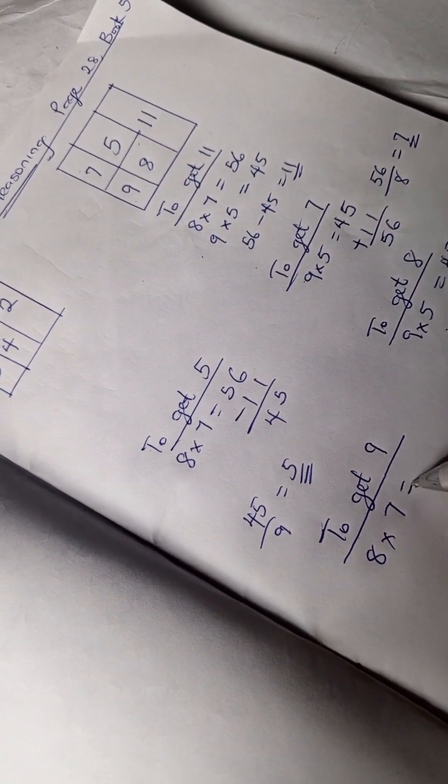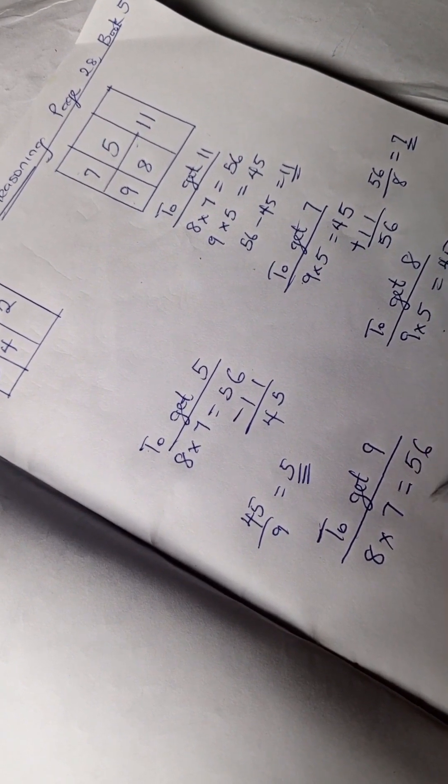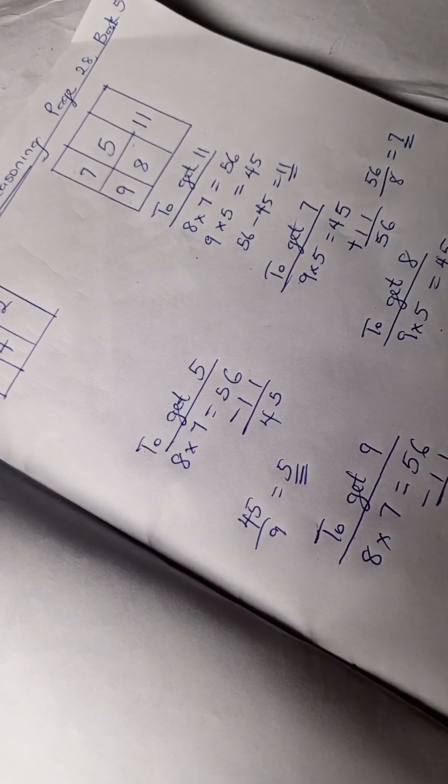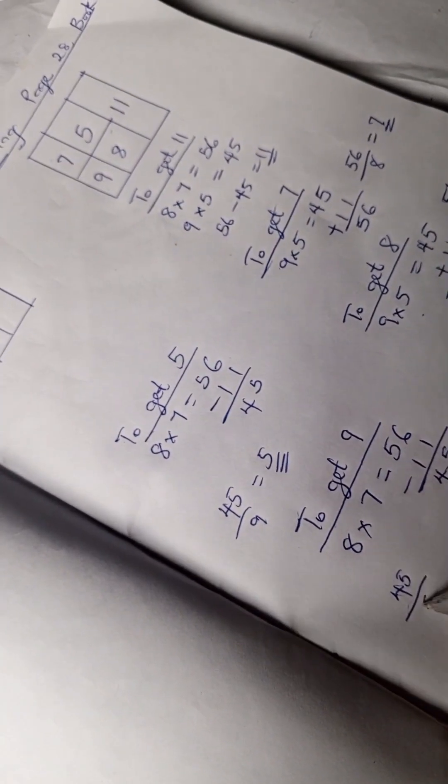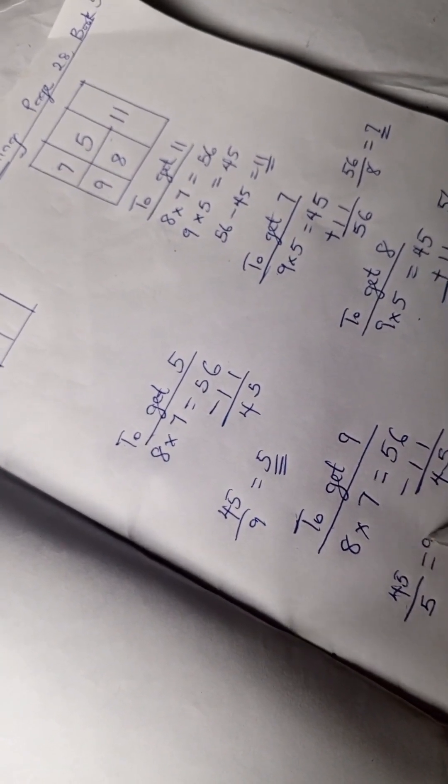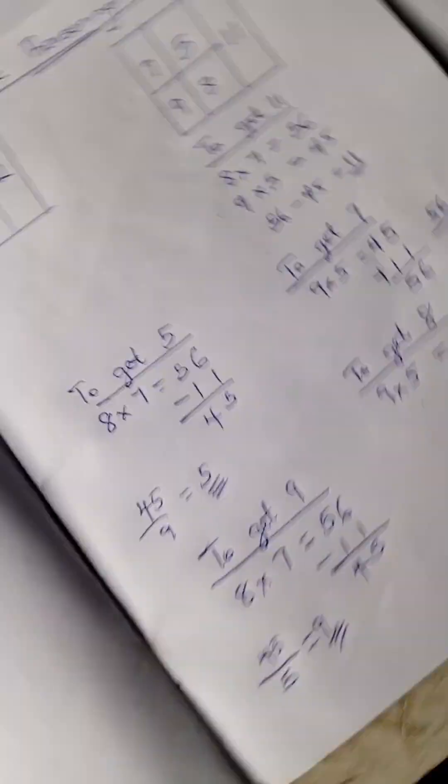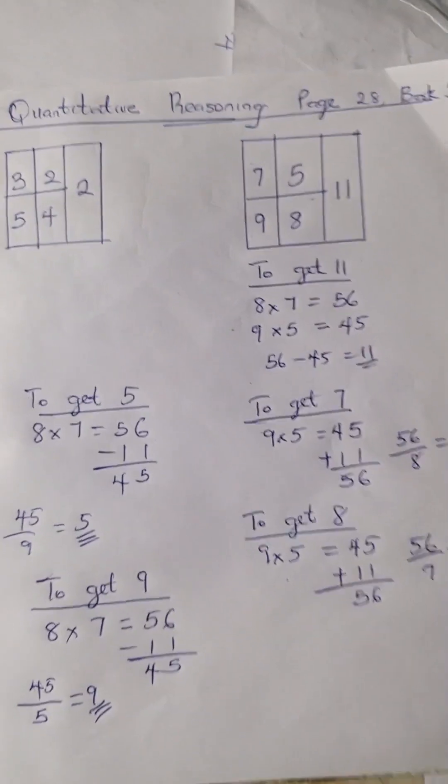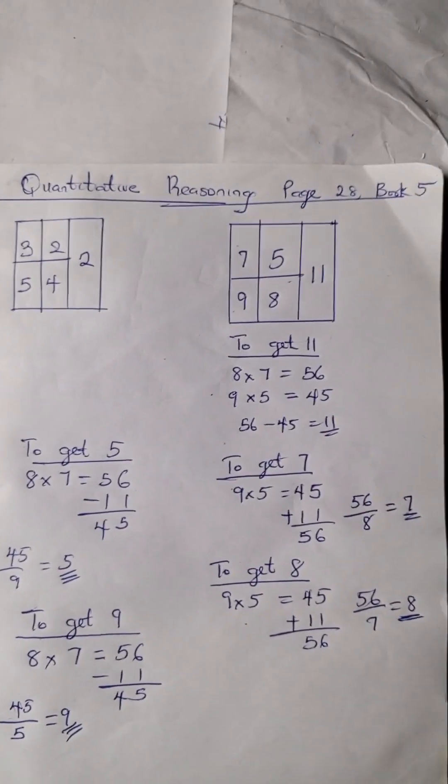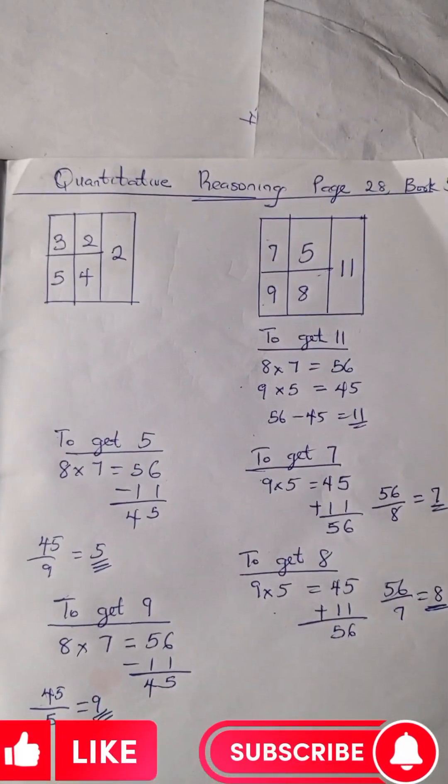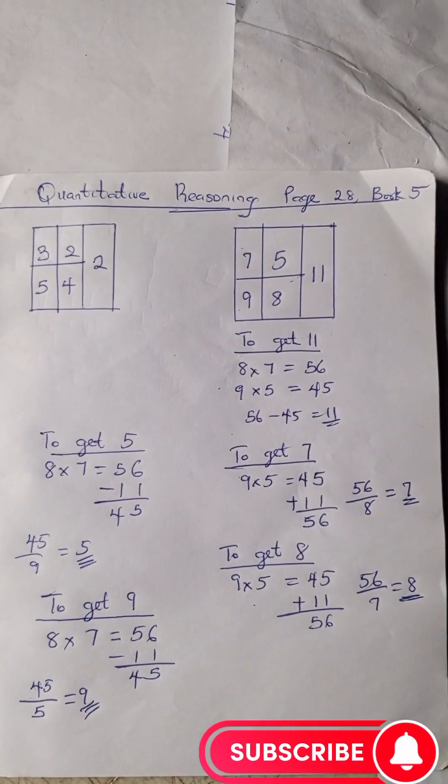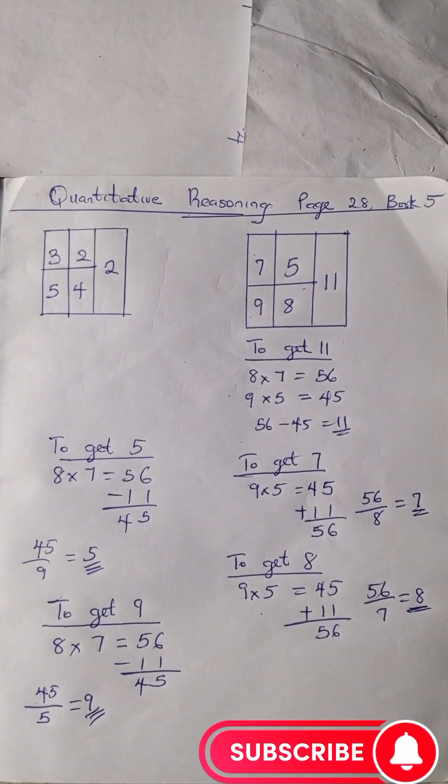56 minus 11 is 45, so 45 divided by 5 is 9. So you see our pattern worked for all. Do well to like, subscribe, share this video. Thank you very much and bye.